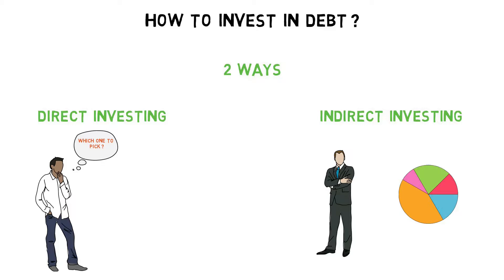Debt funds भी जो होते हैं वो बहुत सारी categories के होते हैं, and सारी categories में से मैं आपको 3 major categories recommend करूंगा check out करने के लिए. Number 1 है long duration funds - ये वो debt funds होते हैं जिनमें fund manager ऐसे bonds में आपका पैसा invest करता है जो long term bonds होते हैं, जो 10-15 साल के bonds होते हैं, and यहाँ पर जो आपको average rate of return मिलता है वो काफी अच्छा मिलता है. Second है liquid और ultra short duration funds - ये वो debt funds होते हैं जहाँ पर जो bonds होते हैं वो short term bonds होते हैं and यहाँ पर liquidity बहुत ज्यादा होती है. And third है gilt funds - ये वो debt funds होते हैं जिनमें fund manager सिर्फ उन bonds में invest करता है जो government ने issue किए हैं, so ये बहुत safe होते हैं because ये सारे bonds AAA rated होते हैं.